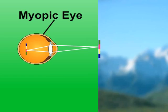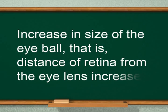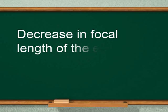The two possible causes of myopia are: first, increase in size of the eyeball, that is, the distance of retina from the eye lens increases. And second, decrease in focal length of the eye lens when the eye is fully relaxed.